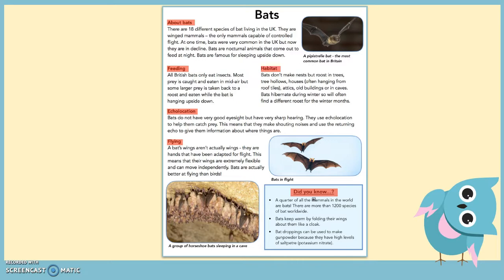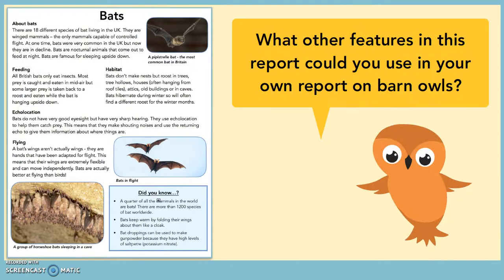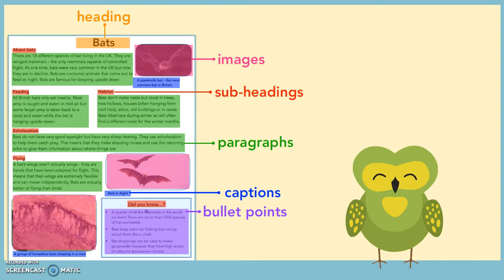So what subheadings do you think would be helpful in our report on barn owls? Think about the type of subheadings we have on this text. What other features in this report could you use in your own report on barn owls using that research from our last session? Pause the video, have a think, and come and join me when you're ready to recap on the features of our non-chronological report. Here you can see our text-marked version of the bats non-chronological report. If you plan to include all these features, you're going to end up with a really clear, interesting report on barn owls.